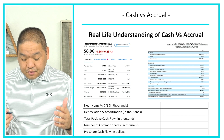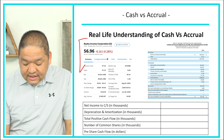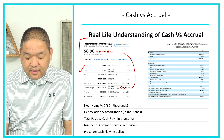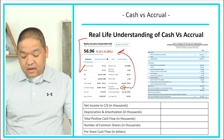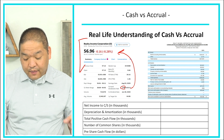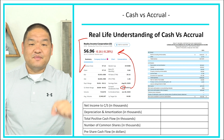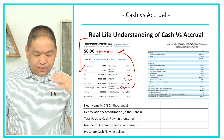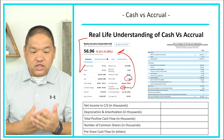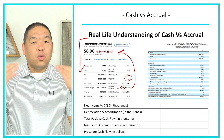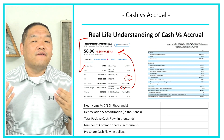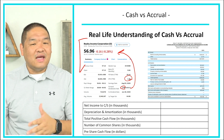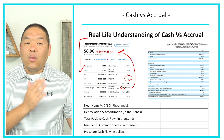Looking at their financials, Realty Income pays a dividend of $2.80 per share per year, representing about 4.91% yield. The problem is their earnings per share is only $1.46. As an accountant, you might think: how can they afford to pay $2.80 when they're only taking in $1.46 per share? There's a discrepancy — how can they pay $2.80 when only $1.46 is coming in?